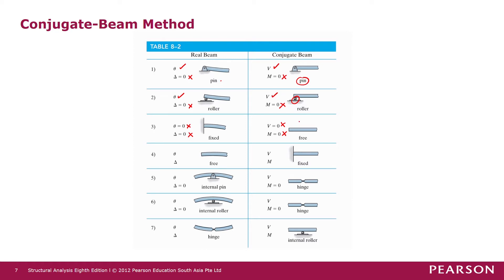In the real beam, a fixed support has no slope and no displacement, meaning there is no shear and no moment at the corresponding end of the conjugate beam — so it becomes a free end. Conversely, when the real beam has a free end, there is slope and displacement, so the conjugate beam must have shear and moment at that point — it becomes a fixed end.